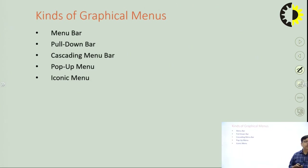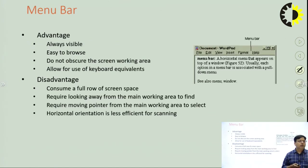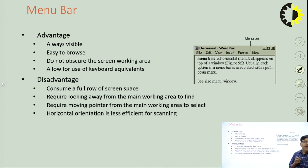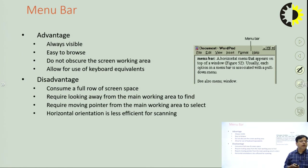Now we will discuss various kinds of graphical menus: menu bar, pull-down menus, cascading menus, pop-up menus, and iconic menus. The menu bar is a horizontal menu that appears at the top of the window. In the figure, you can see multiple options — file, edit, view, insert, format, and help — kept in order of preference. Help is placed last as it has less importance relative to format, while file has the most significance for the user and is placed first. The menu bar is always visible, providing flexibility for the user.